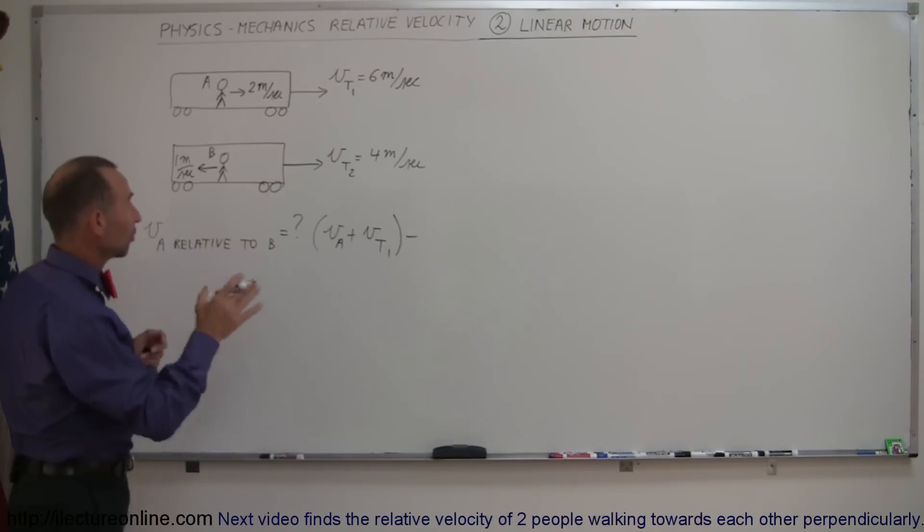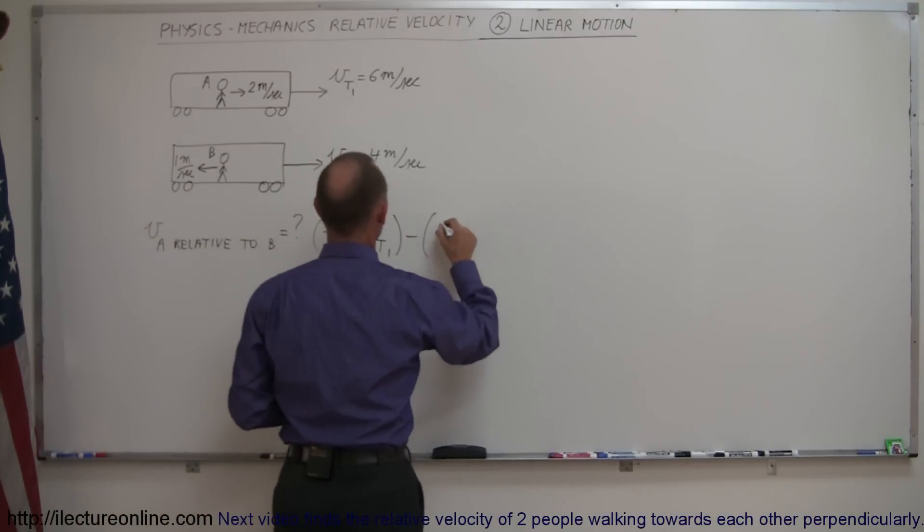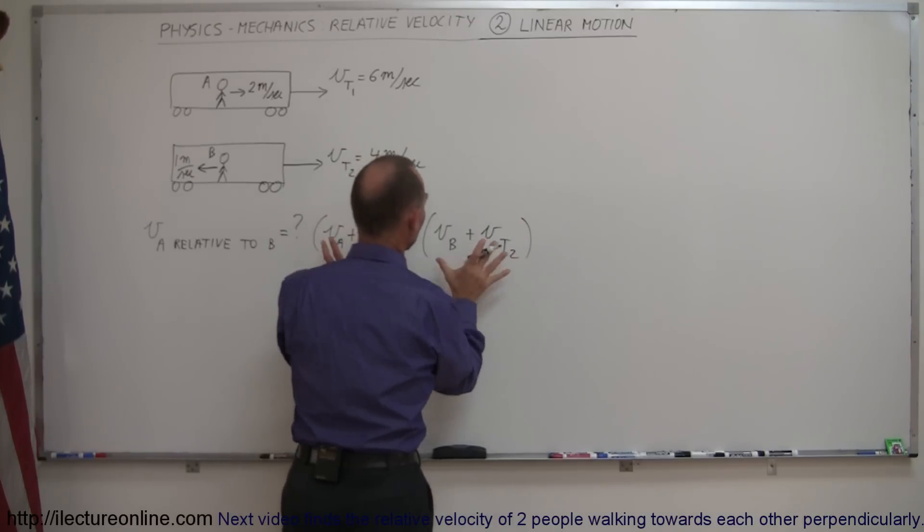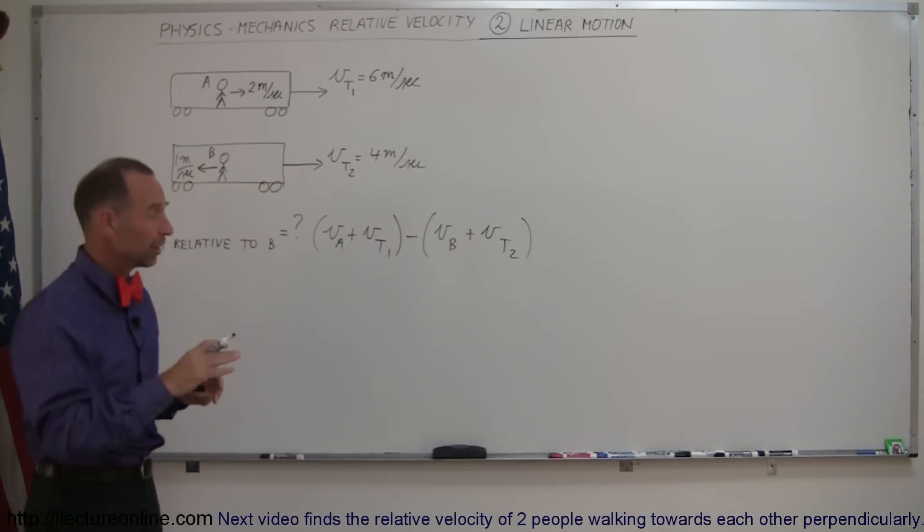Now, if the velocity is to the right, it's positive; if it's to the left, it's negative. So it would be velocity of B plus velocity of train 2. I simply just wrote the equation down. When we plug in the numbers, we have to take into account direction as well.